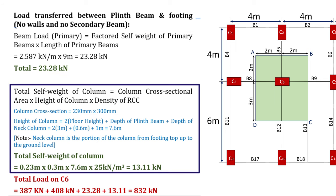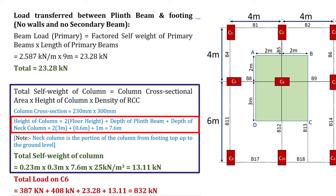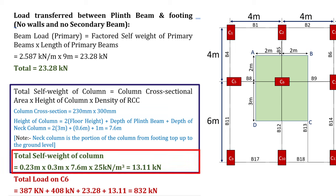The total self weight of the column equals cross-sectional area × height of column × density of RCC. Column cross section is 230×300 mm. Height of column equals twice floor height plus depth of plinth beam plus depth of neck column: (2 × 3) + 0.6 + 1.0 = 7.6 m. Therefore, total self weight of column equals 0.23 × 0.3 × 7.6 × 25 = 13.11 kN.